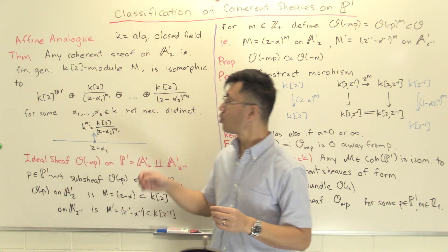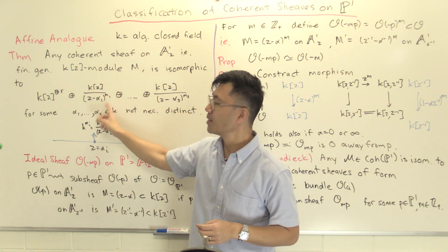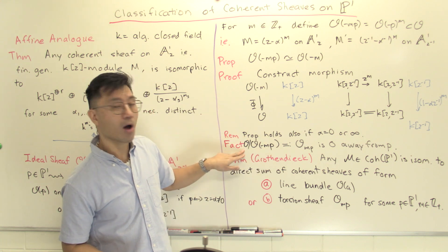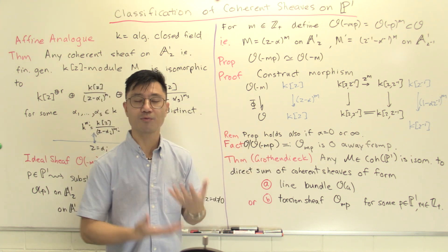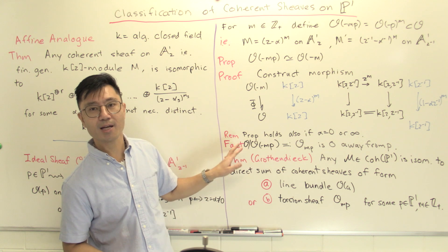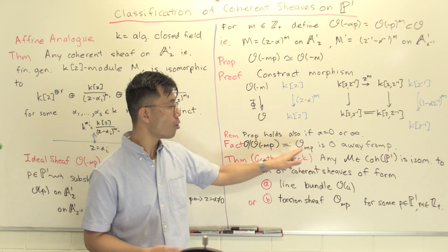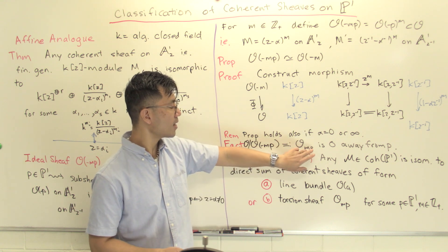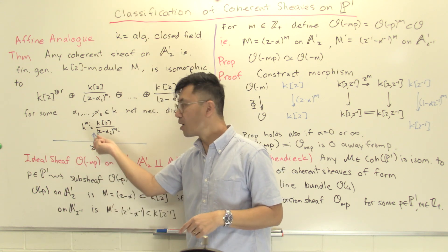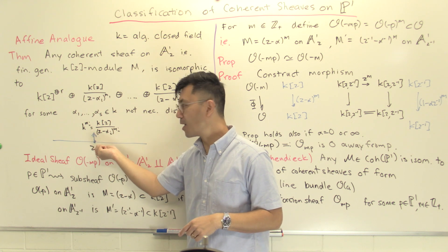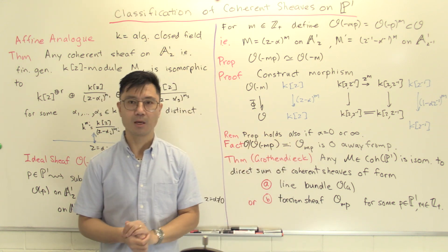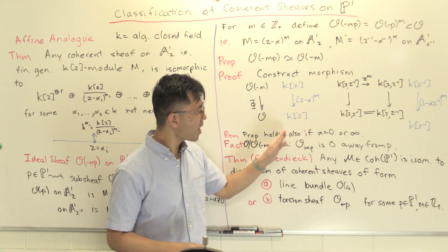The second thing is that we want to look at the quotient of K[Z], the analogues of K[Z] over this ideal here. So we're going to look at O/O(-mp). O(-mp) is a subsheaf of O, so you can take the quotient. Remember, coherent sheaves form an Abelian category. I'm going to write this as O_mp, because when m equals 1, that's my definition of the skyscraper sheaf O_p. You want to think of this as, instead of just looking at a point, sort of like m copies of that point—a weighted point where the weight is m, viewed as an infinitesimal thickening of that point. So I'm going to denote that by O_mp.